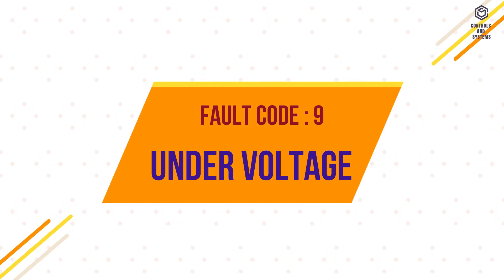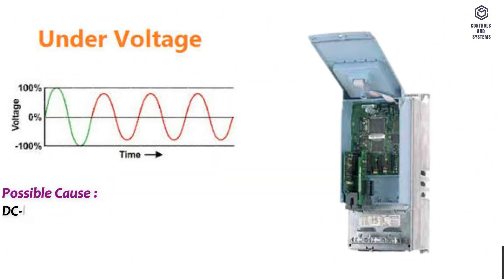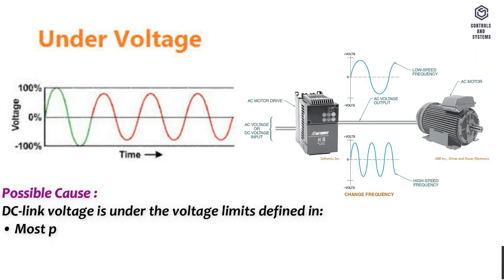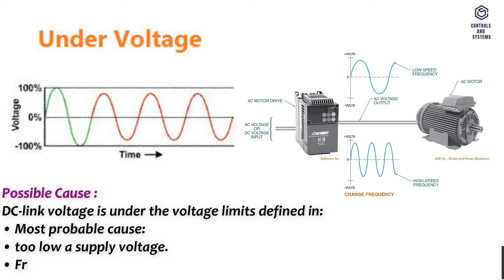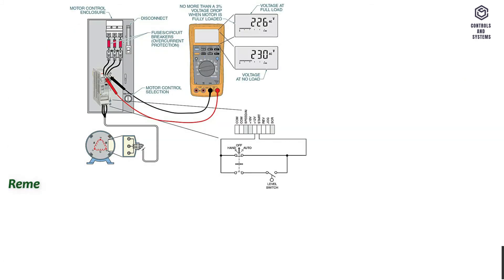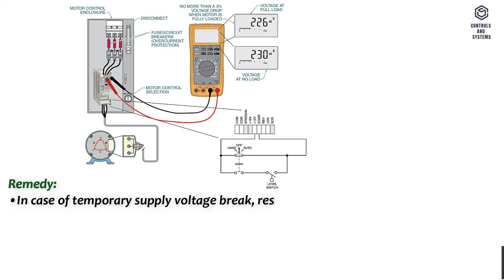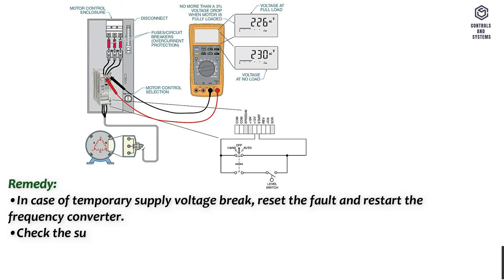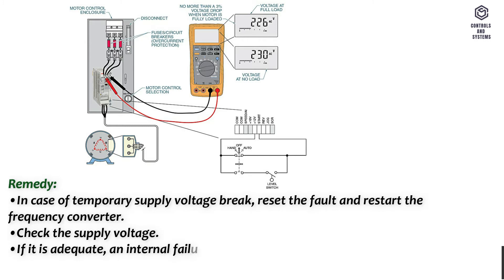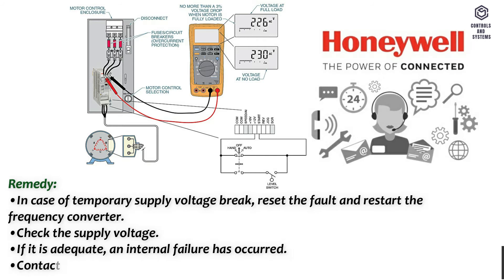Fault code 9 – Under voltage. Possible cause: DC link voltage is under the defined voltage limits. Most probable cause is too low a supply voltage or a frequency converter internal fault. Remedy: in case of temporary supply voltage break, reset the fault and restart the frequency converter. Check the supply voltage; if it is adequate, an internal failure has occurred — contact technical support.